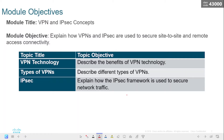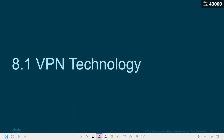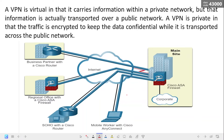This module explains how VPNs and IP security are used to secure site-to-site and promote remote access connectivity. A VPN is private in that the traffic is encrypted to keep data confidential while it is transported across the public network. The figure shows a collection of various types of VPNs managed by an enterprise main site, with tunnels enabling remote sites and users to access main site network resources securely.